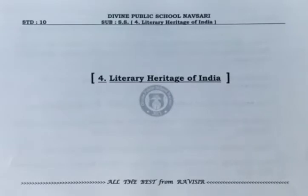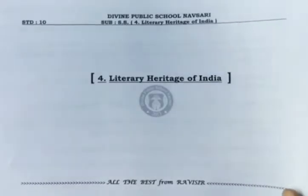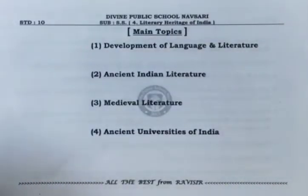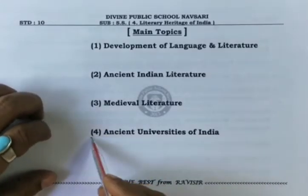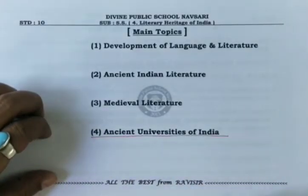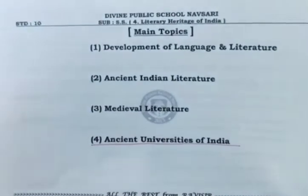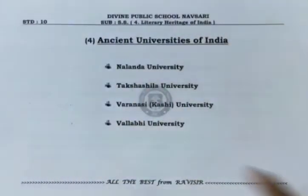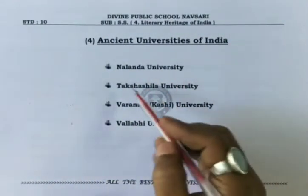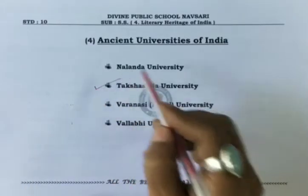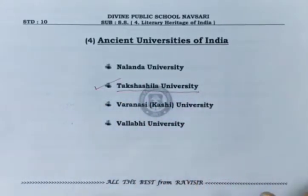Hello children, Ravisa here. Welcome back to the 11th session of Literary Heritage of India, the 4th unit in the History section of your Social Science textbook for Class 10. In the previous session we had started with ancient universities of India. In this session also, we shall continue with the same topic and we will discuss the next university of ancient India — that is Takshashila University.